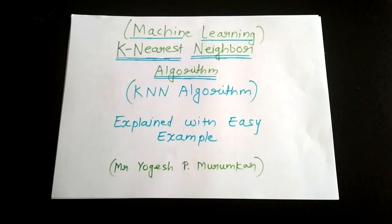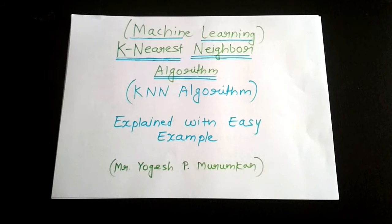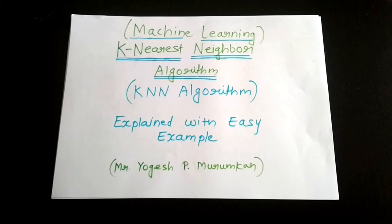In this video we are going to talk about the K-Nearest Neighbor algorithm. KNN, as it is normally called, is a classification algorithm, and classification is determining what group something belongs to.